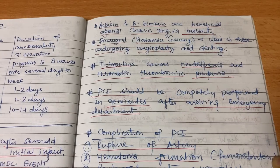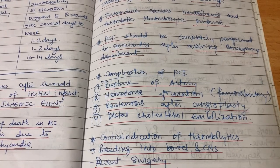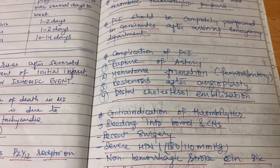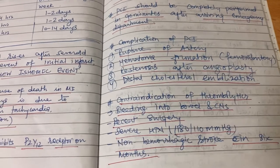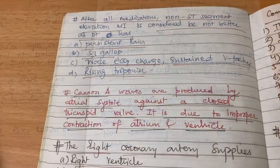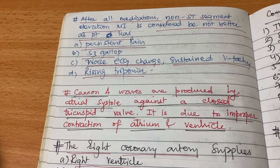PCI should be completely performed within 90 minutes after arriving in the emergency department. Complications of PCI include rupture of artery, hematoma formation, re-stenosis after angioplasty, and distal cholesterol embolization. Contraindications of thrombolytics: bleeding into bowel and CNS, recent surgery, severe hypertension (over 180/110 mmHg), and non-hemorrhagic stroke within six months. After all medication, non-ST segment elevation MI is considered not better if the patient has persistent pain, S3 gallop, worse ECG changes, sustained V-tach, and rising troponin.